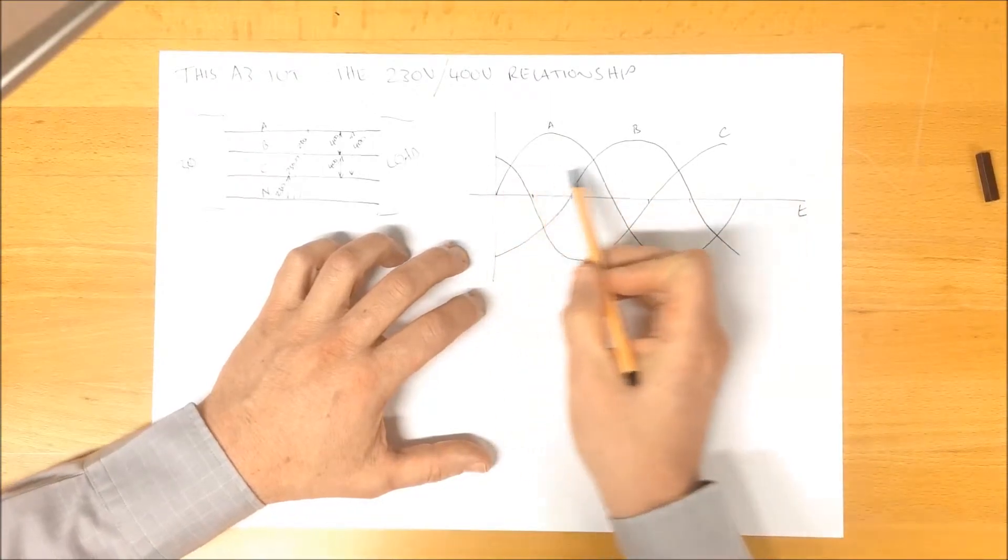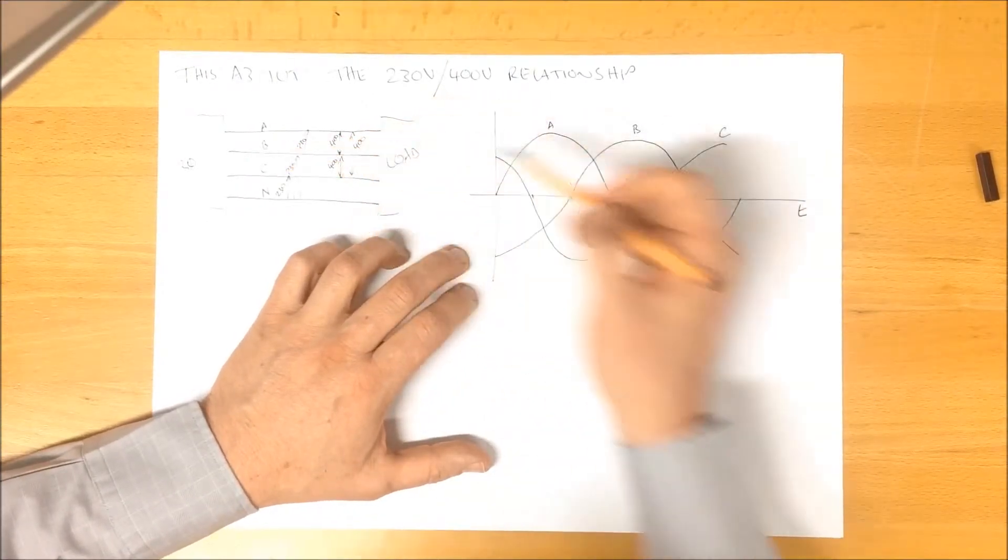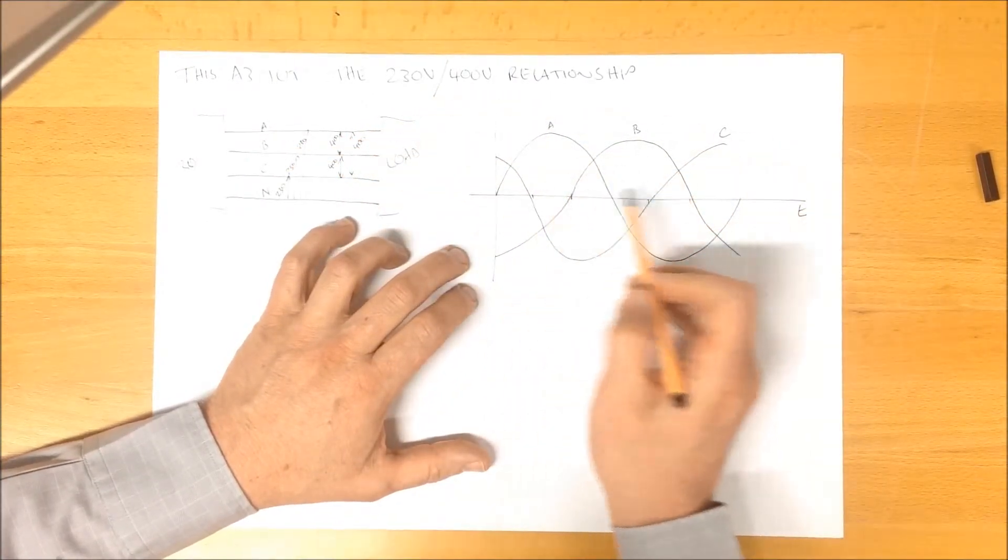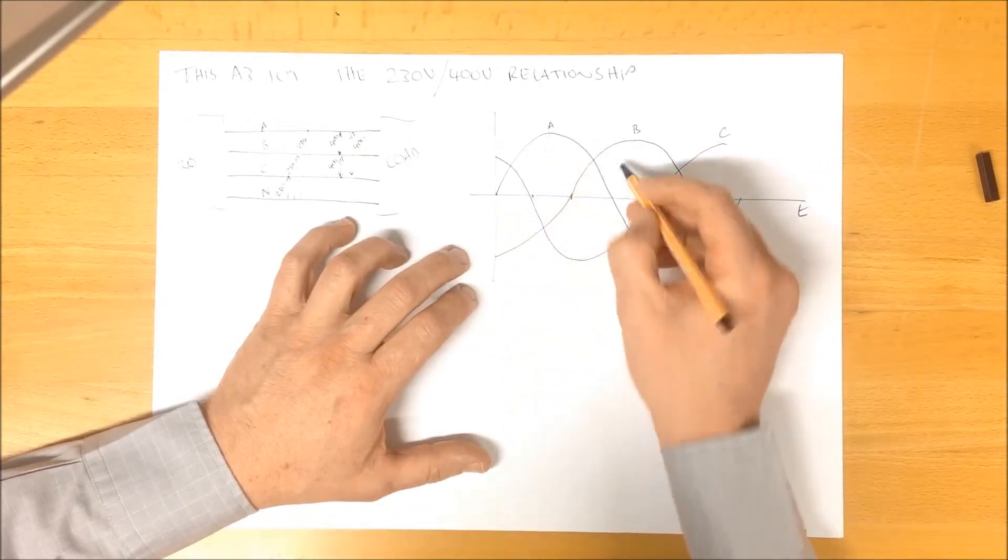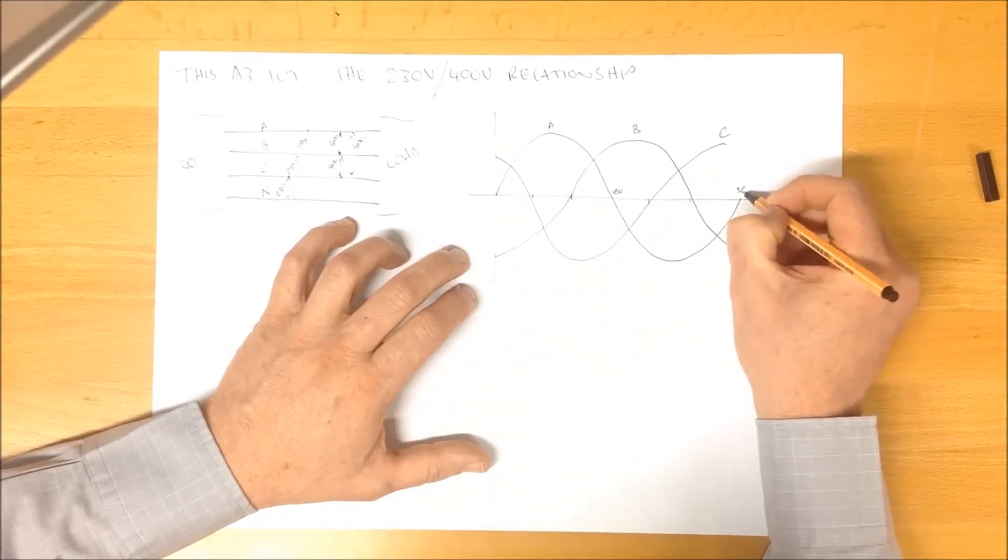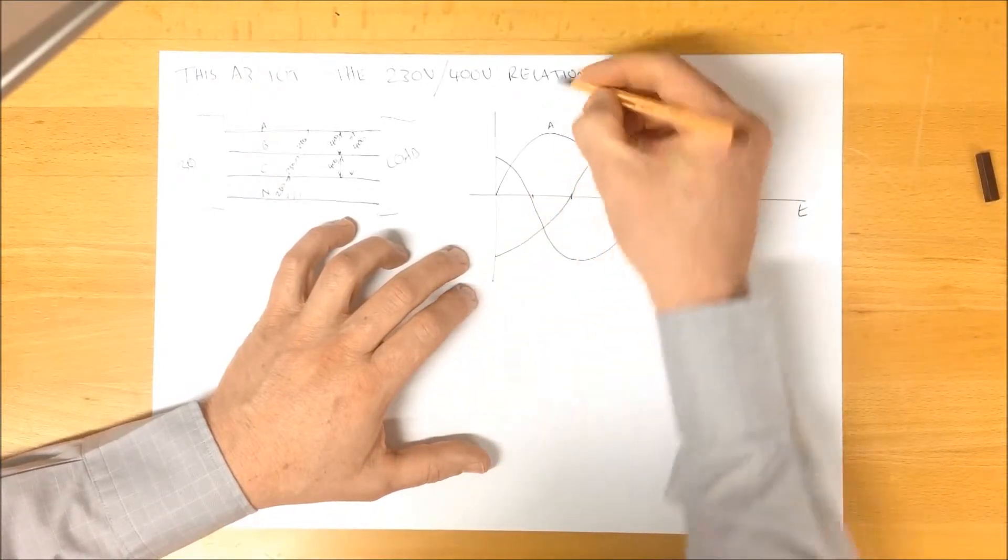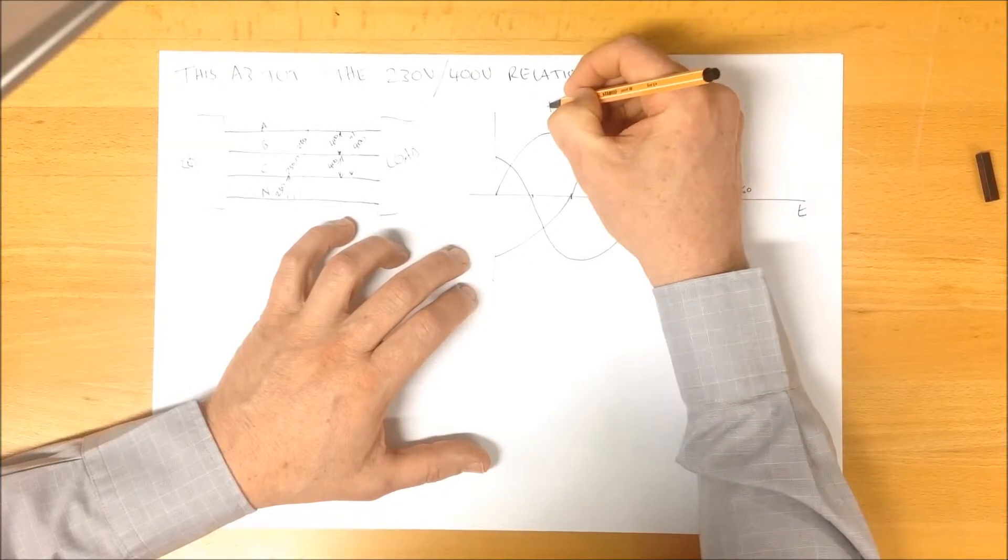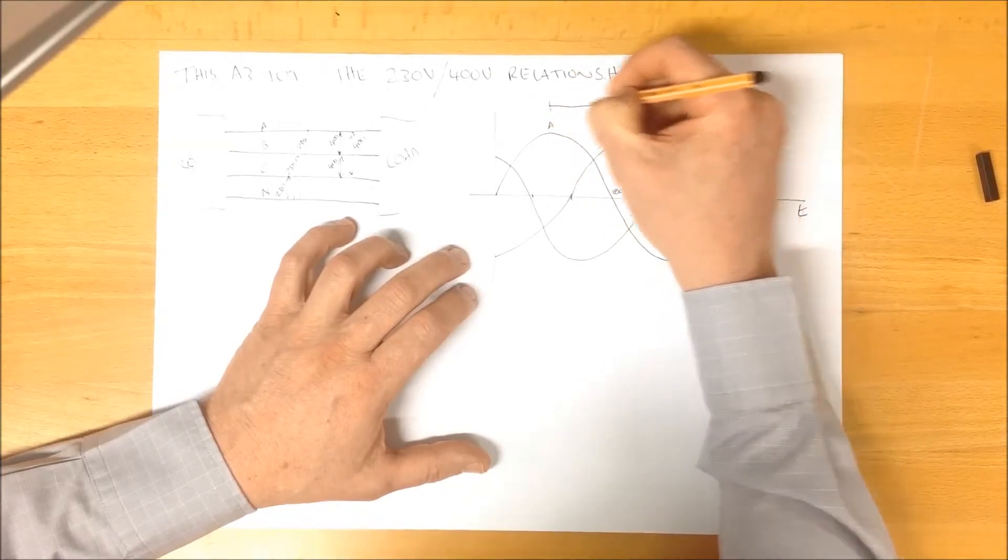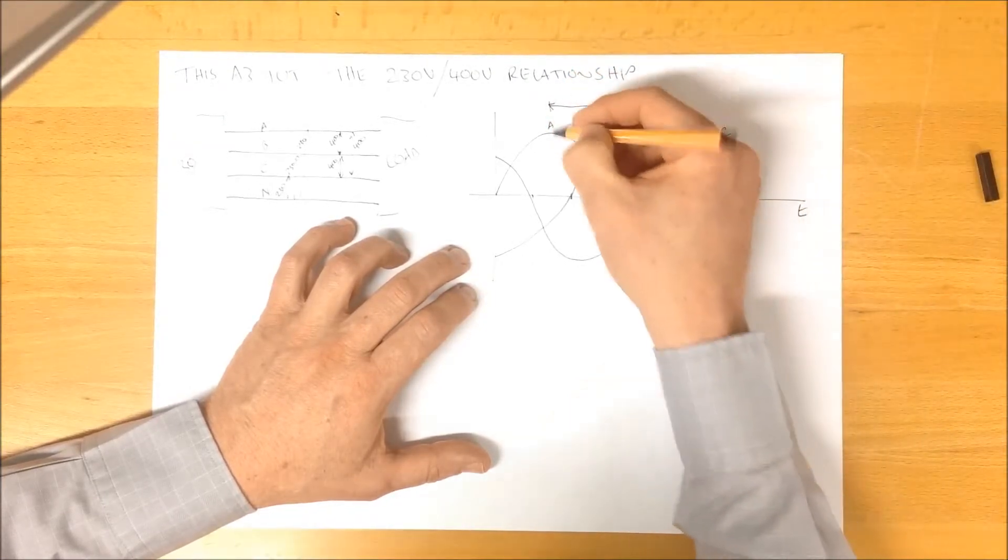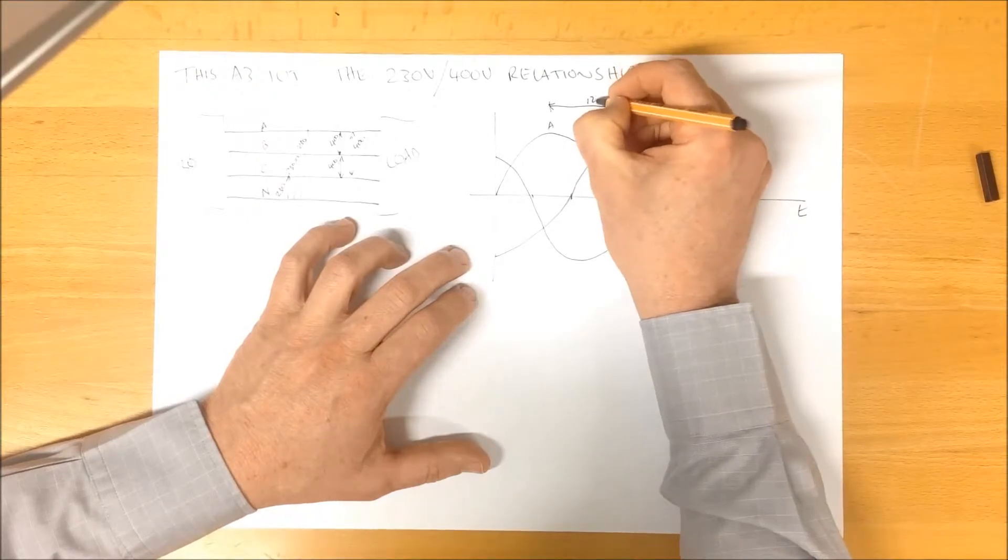We would see our three waveforms from our three phases and they are all 120 degrees apart. There is 180 degrees there for one cycle and 360. This time here between any particular point in time here and its relative point on another wave peak is 120 degrees.